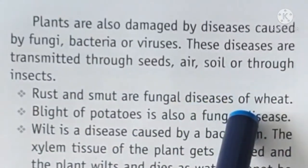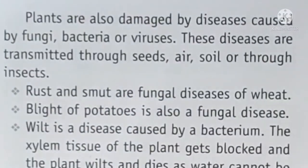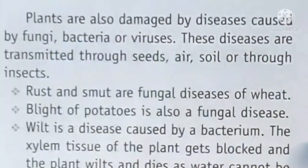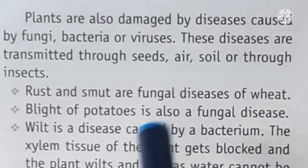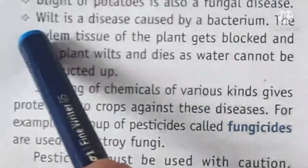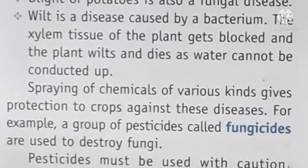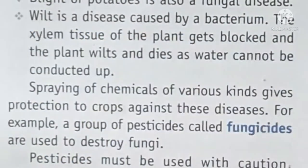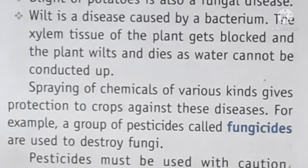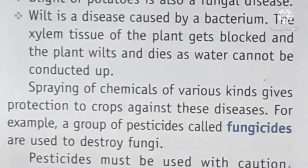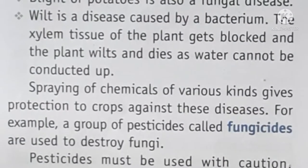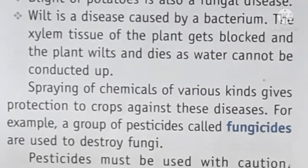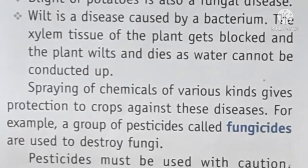Wheat has two fungal diseases: rust and smut, both caused by the fungus microorganism. Blight of potatoes is also caused by fungi and is a fungal disease that can destroy crops. Wilt is a disease caused by bacteria. In wilt, the xylem tissues, which transport water and minerals from roots to different parts of the plant, become blocked. Because water and minerals cannot reach different parts of the plant, those parts dry out and wilt, and the crop stops growing.